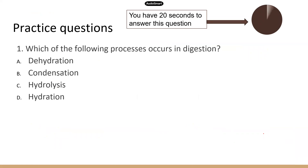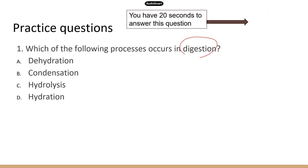Practice question: Which of the following processes occurs in digestion? You need to know that in digestion, big macromolecules like carbohydrates, proteins, and nucleic acids are broken down to smaller molecules so they can be absorbed by the body. This is about breaking down large molecules, so the correct answer is hydrolysis. Hydration just means adding water and has no relevance here.